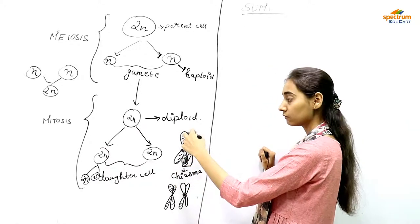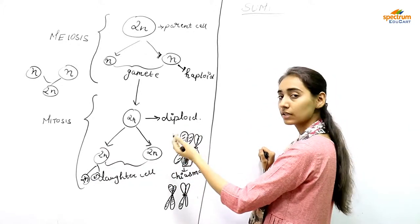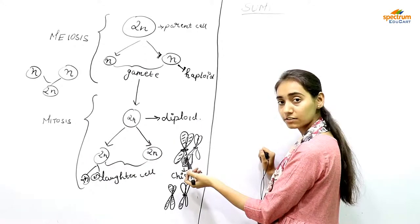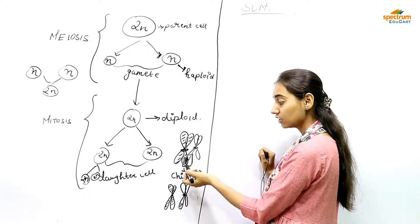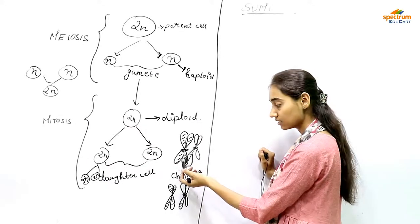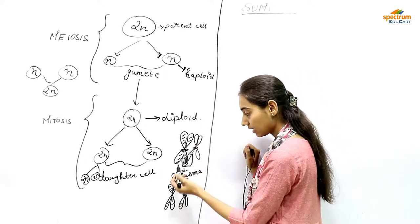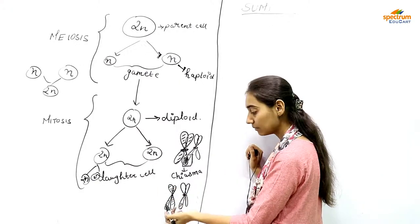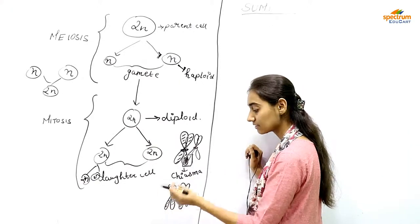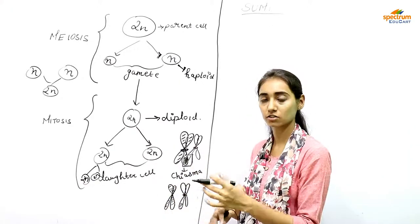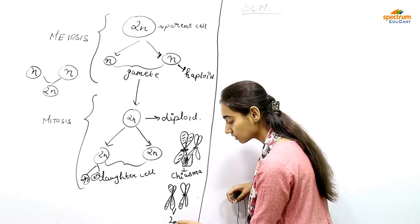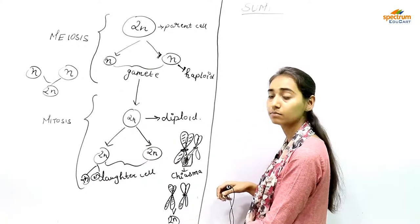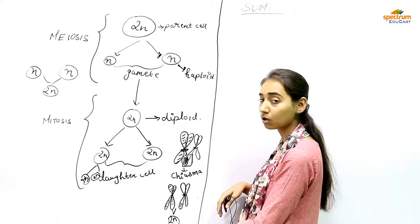One chromosome was from the male — the father — and one from the female. There is exchange of characters in the process of meiosis: some characters of the female are passed on to the male lineage and vice versa. These cells then undergo mitosis and the characters are passed on to the offspring.